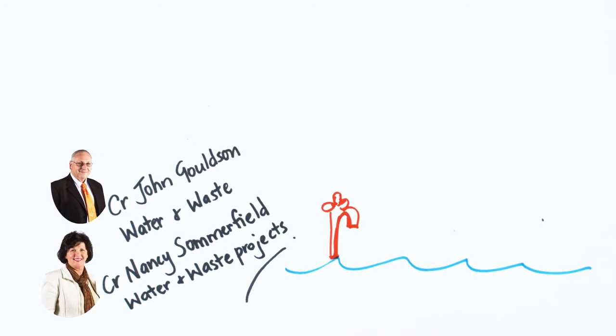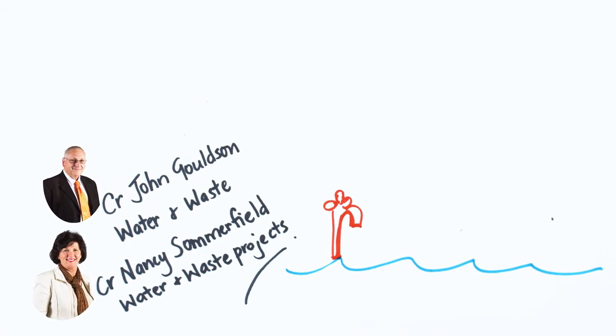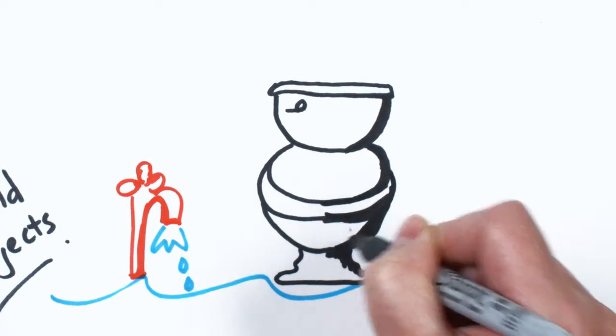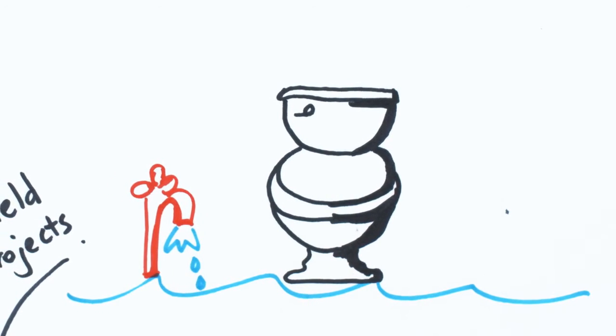The extension of the sewerage networks in Kingsthorpe, Gowrie Junction, Westbrook and the Toowoomba Enterprise Hub at Charlton. Trunk and reticulation water main replacements and extensions across the region will cost $4.3 million.